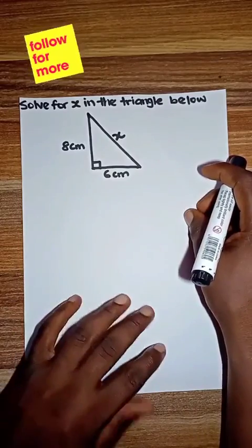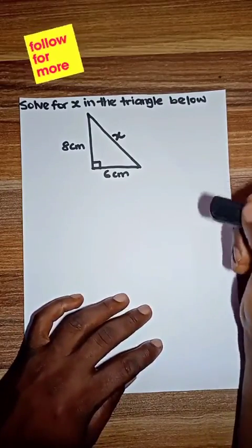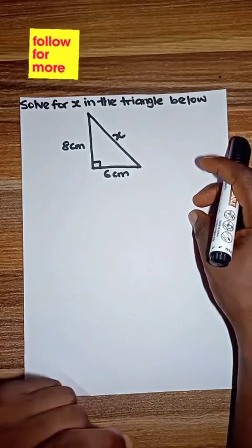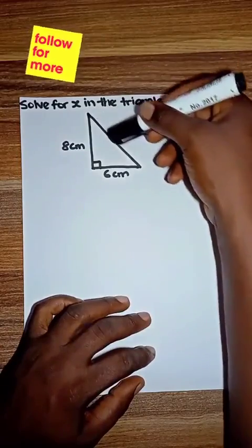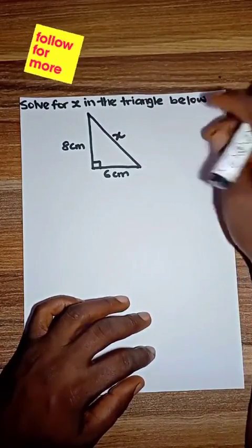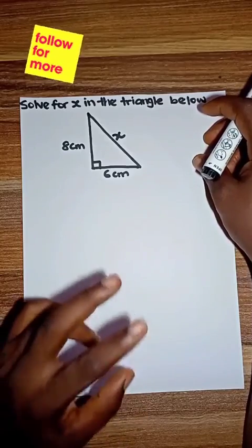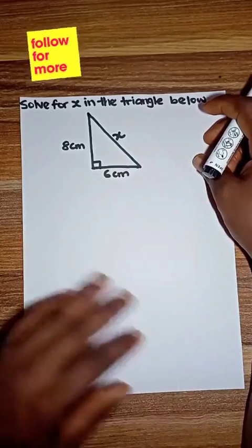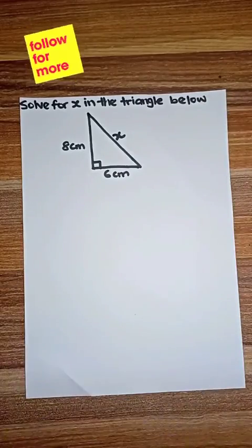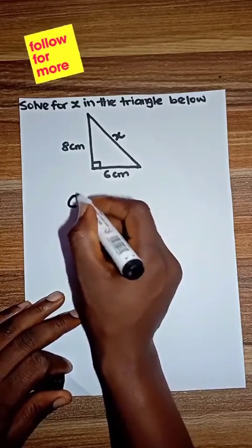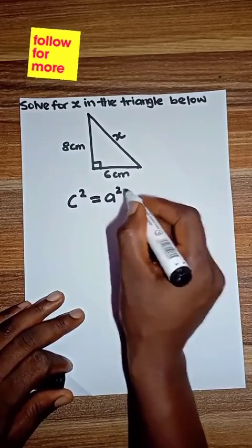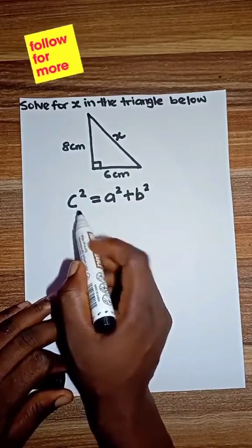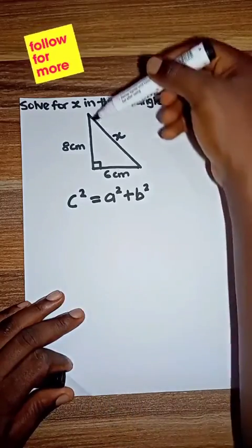So since it is a right-angle triangle, we can apply Pythagoras theorem. Pythagoras theorem is used to solve for one unknown side of a triangle when two sides are given - not for every triangle, but for right-angle triangles. The formula is c² = a² + b², where c is the hypotenuse, which is this side.